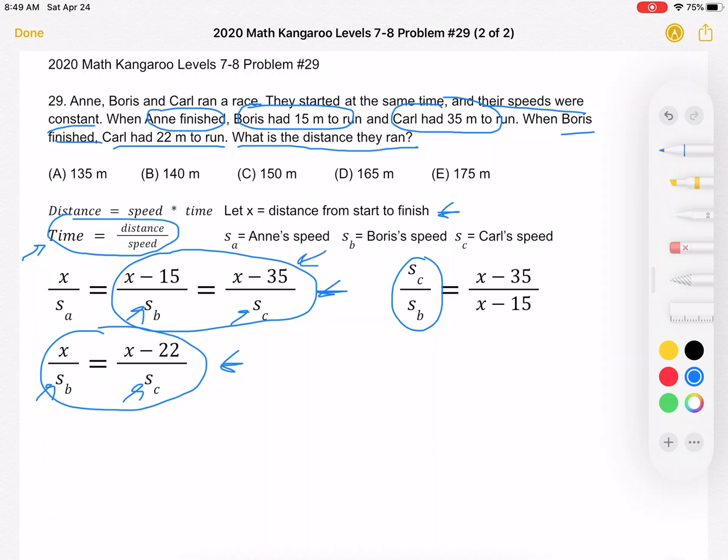So rearranging what we have here, we have s sub c over s sub b is equal to x minus 35 over x minus 15. Again, we want to do this because we want to isolate for x, solve for x because that's what we're looking for in the problem. Now, we can rewrite this second equation. Again, isolating s sub c over s sub b by cross multiplying. And we can find that that's equal to x minus 22 over x. So now that we've set these two things, each equal to s sub c over s sub b, that means that this, x minus 35 over x minus 15, must be equal to this, x minus 22 over x.